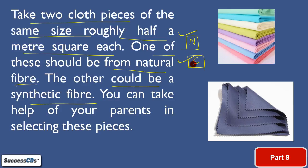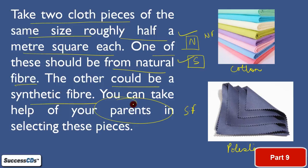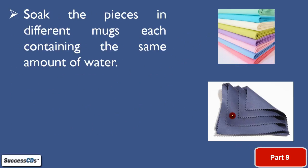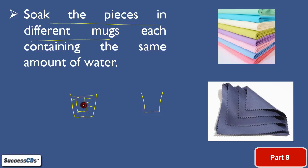One cloth piece should be of natural fiber and the other of synthetic fiber. Suppose this is cotton — a natural fiber — and this is polyester — a synthetic fiber. As you can see in the figure, these are cotton and polyester bed sheets. Dono ko same size ka lena hai. Agar aap cloth pieces ko pehchaan na paayein, you can take the help of your parents in identifying the natural and synthetic fiber cloth. Then soak the pieces in different mugs filled with water.